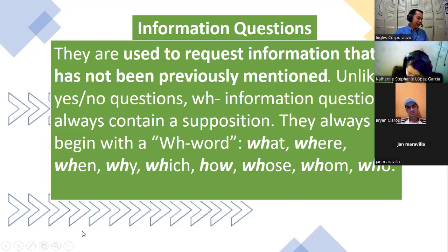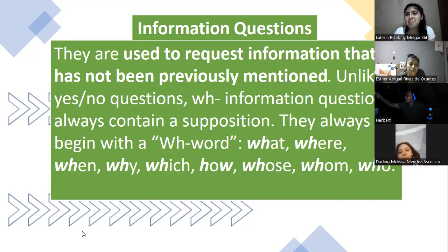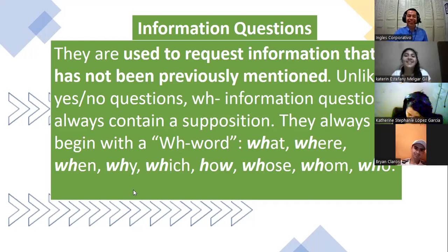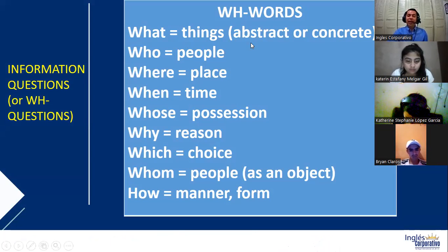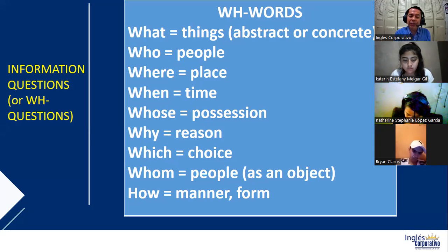Las information questions hablan de un tema que no ha sido previamente mencionado, okay. Y se basan en una suposición, right. They always begin with the WH word. Todas comienzan con una palabra que lleva WH, meaning what, where, when, why, which, how, whose, whom, who, etcetera, right. Todas llevan WH, inclusive esta vez aunque está al revés, pero lleva WH, okay.